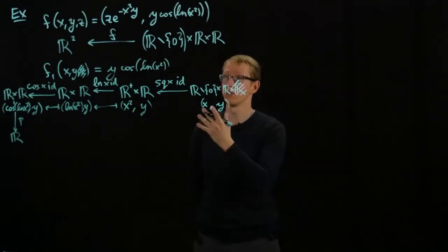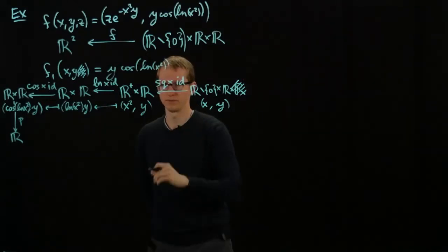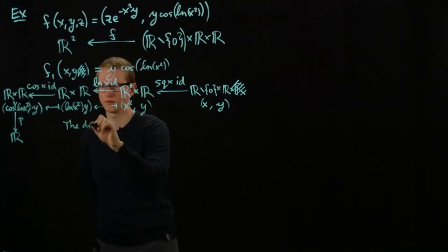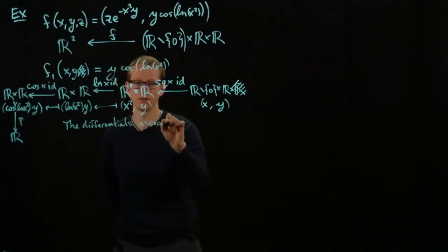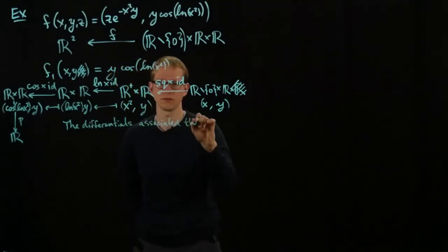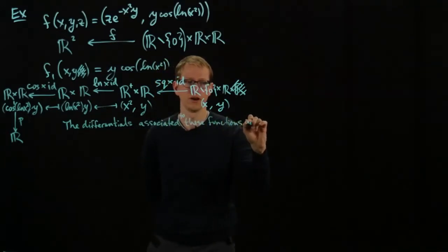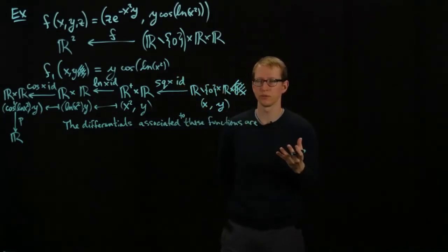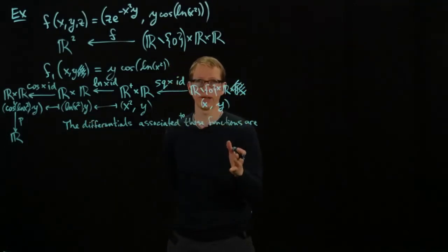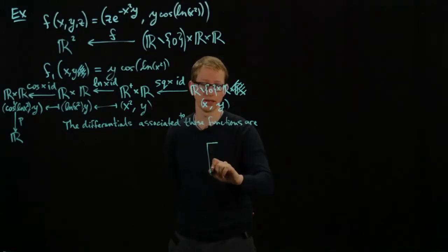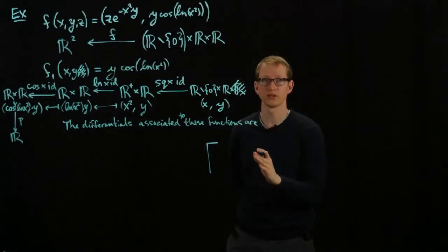To calculate the Jacobian, we find the differentials associated to each of these functions. Because they're going to be matrix-multiplied together, it's a good idea to put them in the same order, and we'll work from right to left. The first function — let's check what kind of matrix the differential should be. The codomain has two components and the domain has two components, so it should be a 2×2 matrix.